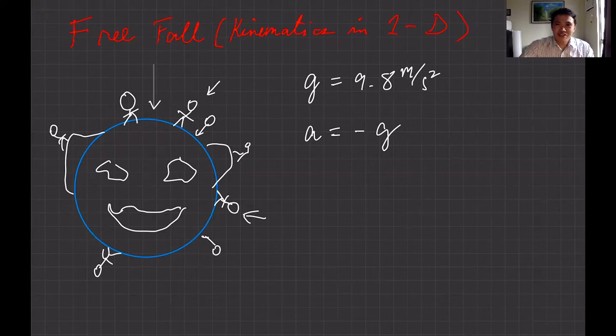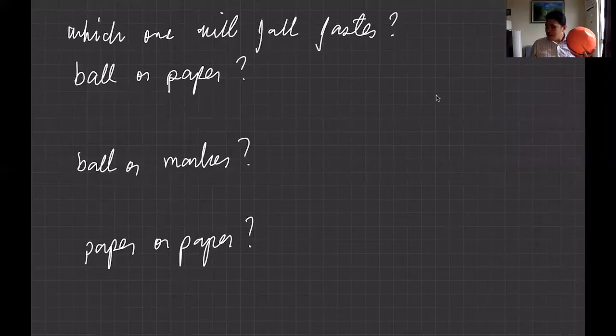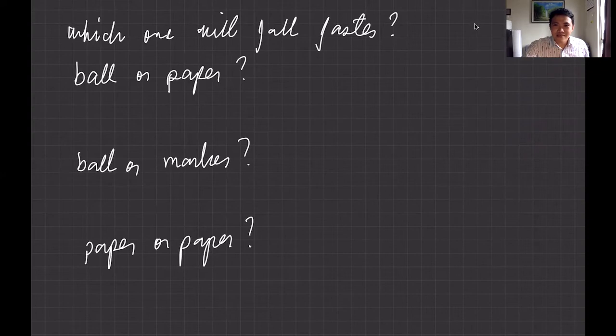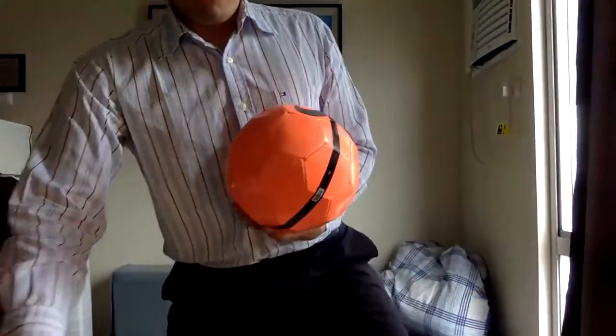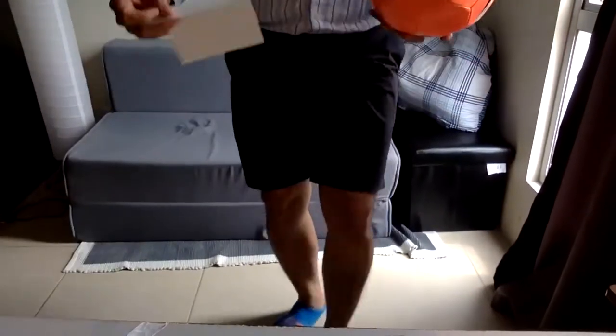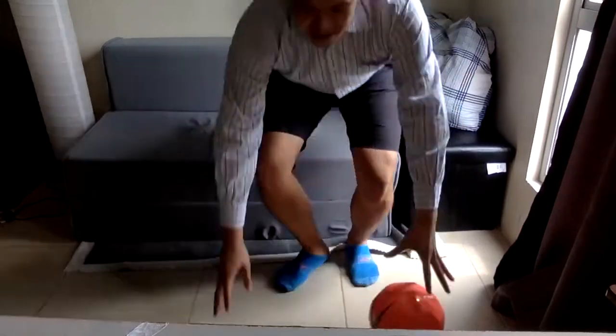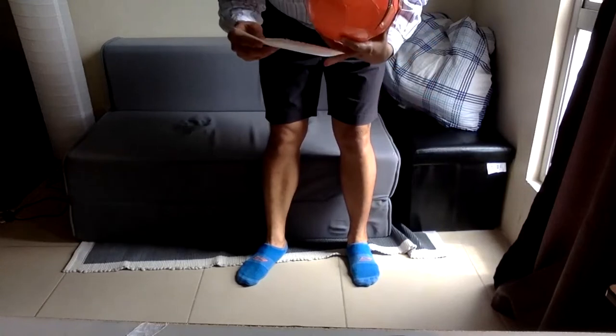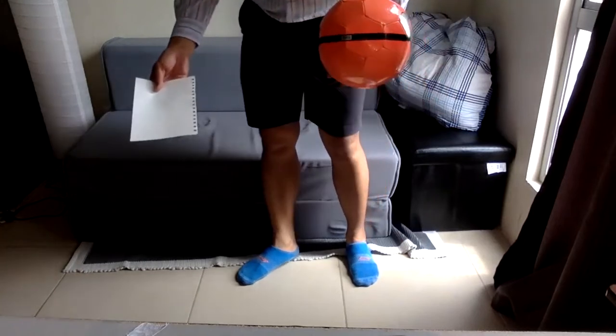Now let's have a demonstration. We have a ball, a piece of paper, and a marker. First question: which one will fall faster — a ball or a paper? Another question: which one will fall faster — a ball or a marker? And how about both papers — are they going to fall at the same rate? Write down your answer. Which one will fall faster — a ball or a paper?